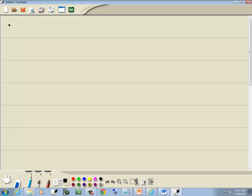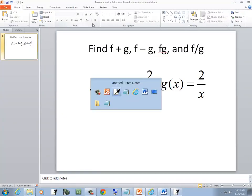So we're given two functions. We're given f of x is equal to 3 plus 2 over x, and g of x is equal to 2 over x.